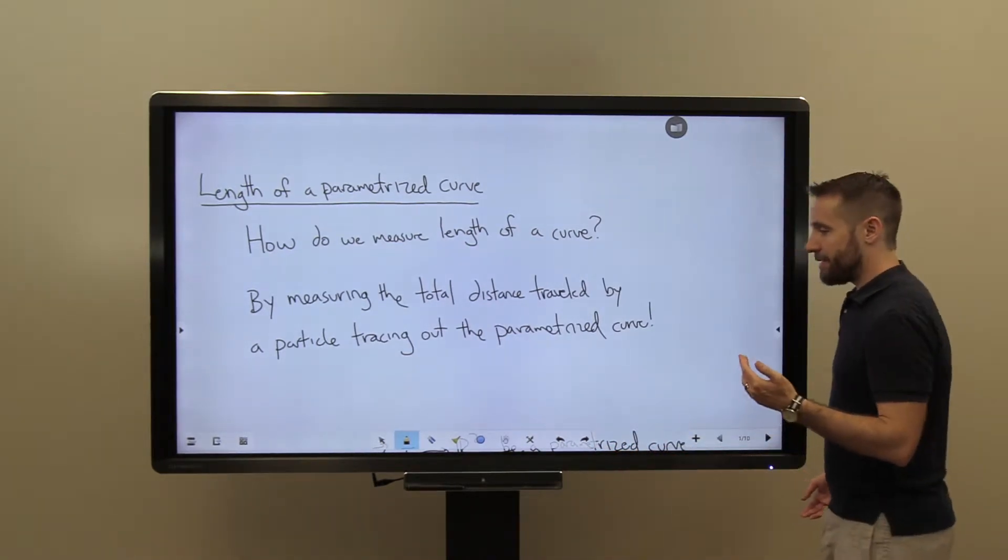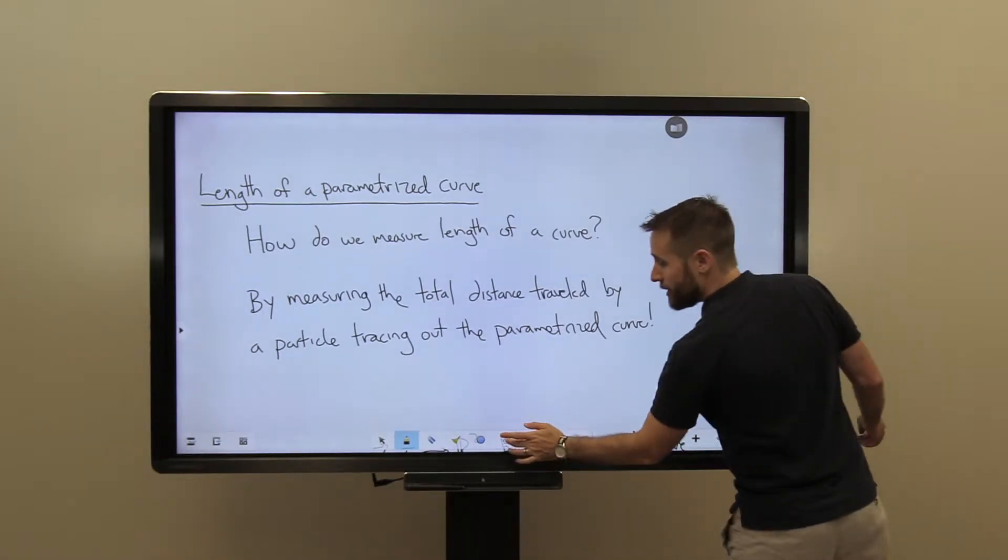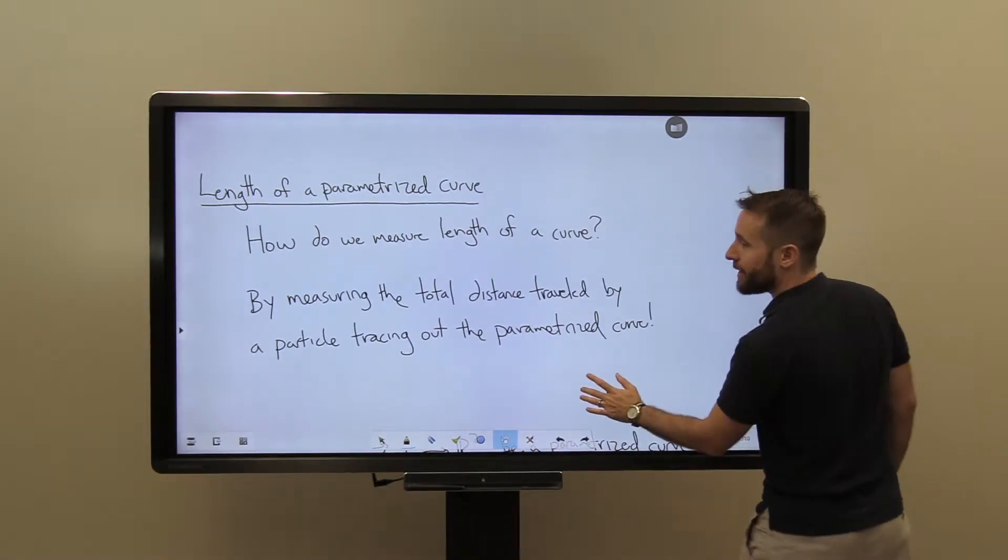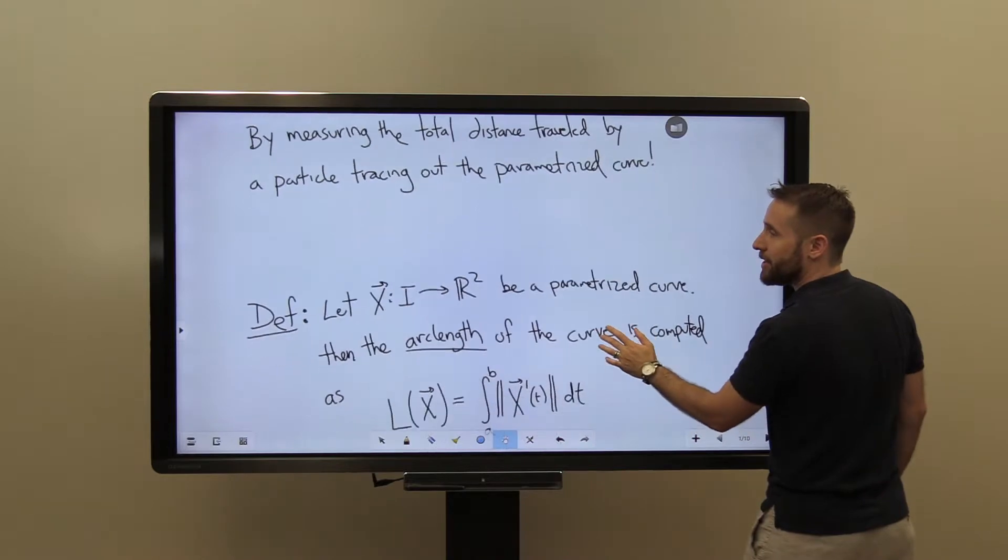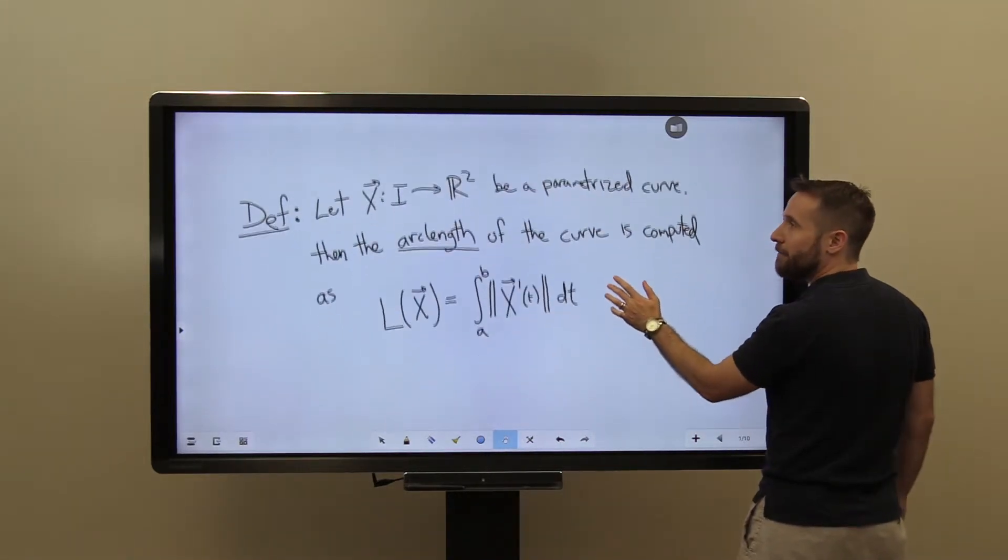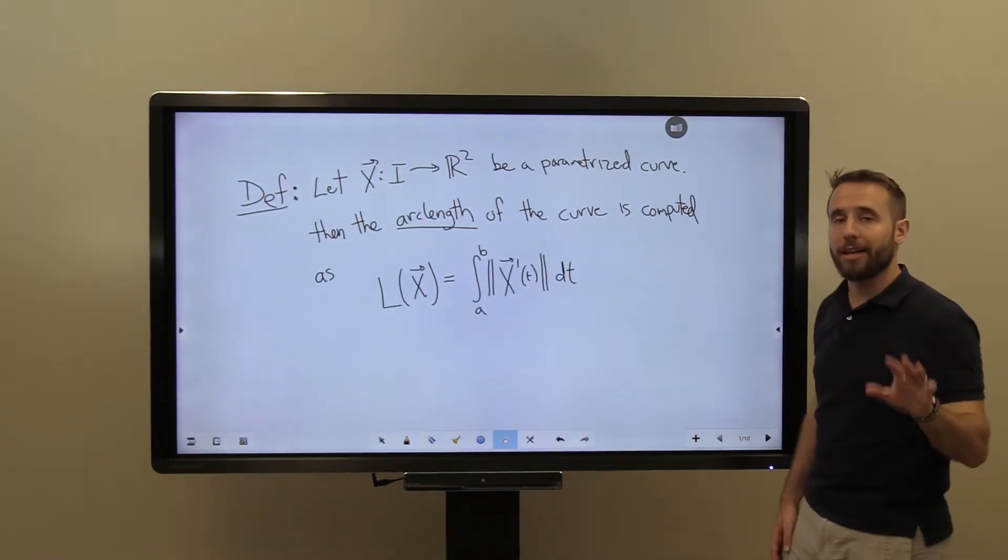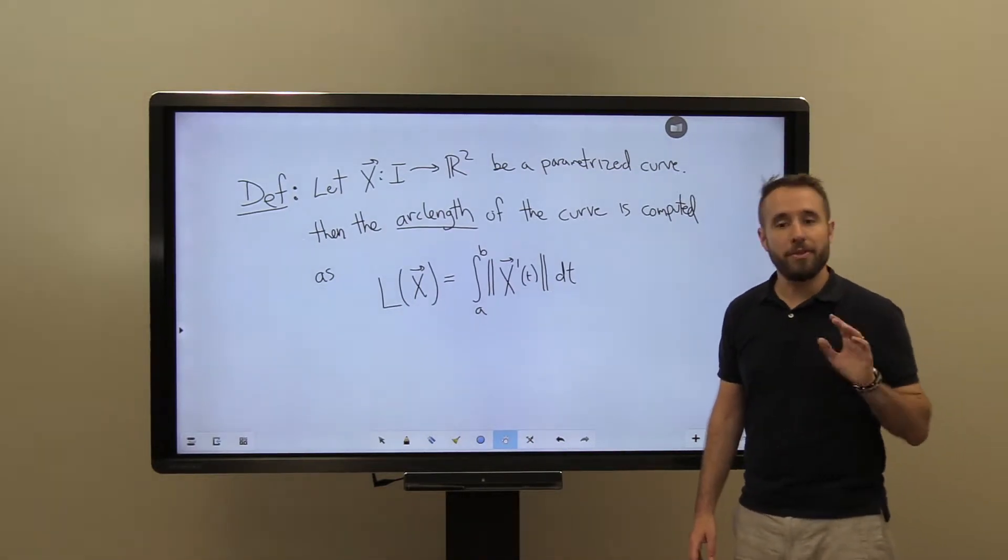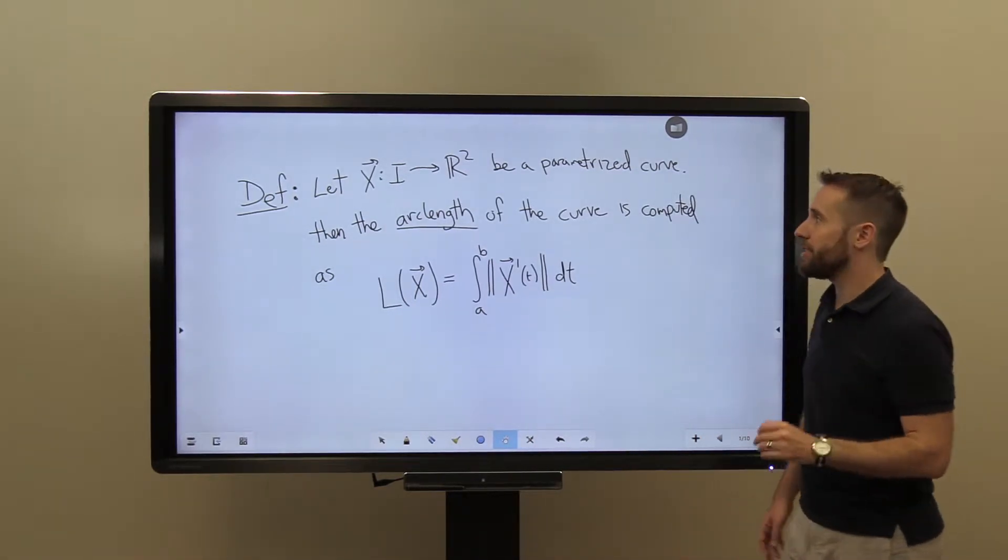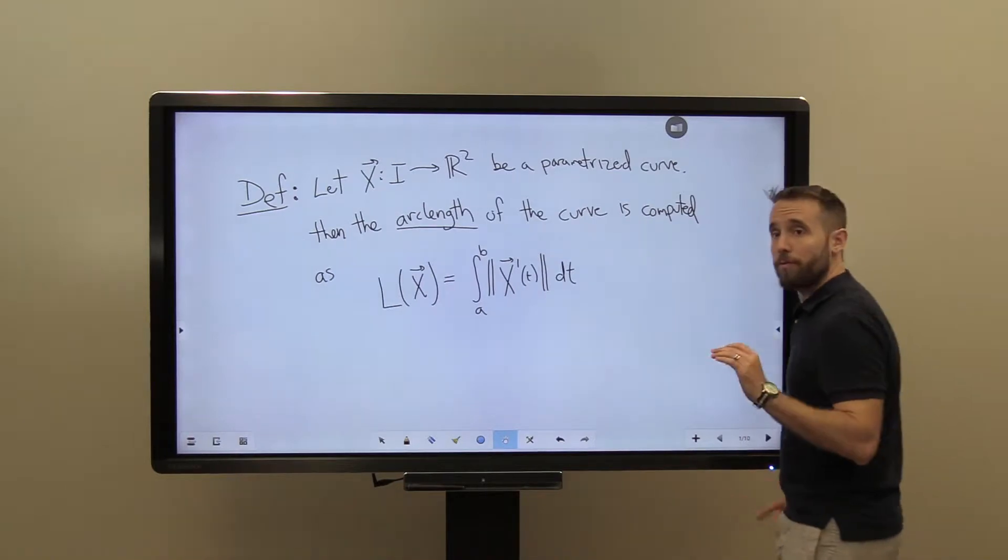But what this leads us to conclude is that the total arc length can be, I should say, the total length of the curve, which we'll now formally define as arc length, can be measured by integrating up the speed of the parameterization.